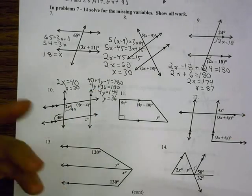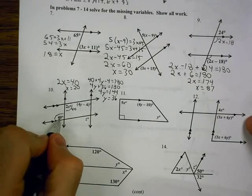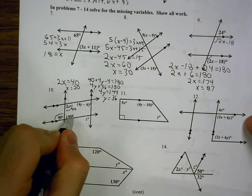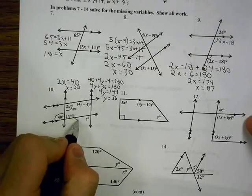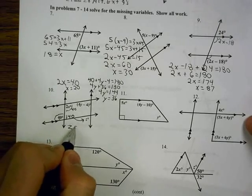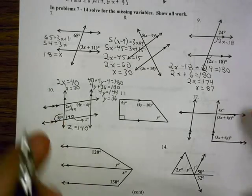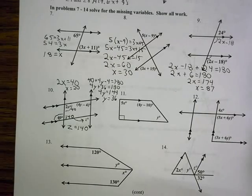And to get to z, we have a couple different ways to get there. I'm going to take this 40 and make the one next to it 140, and then by alternate interiors, I have z as 140. And you could have gotten there another way, but that's one that works for me.